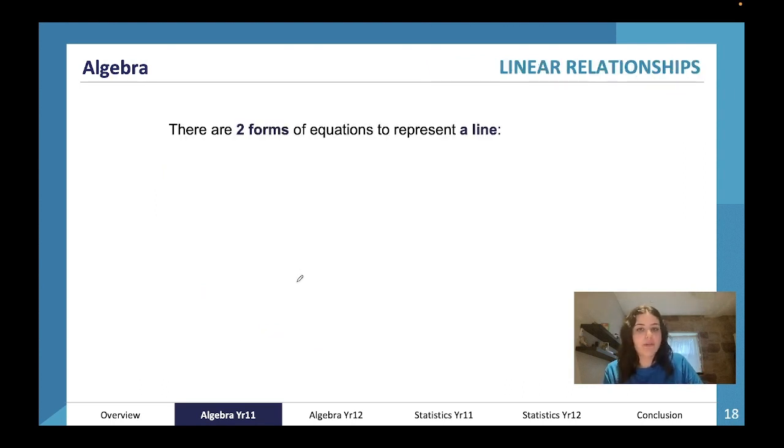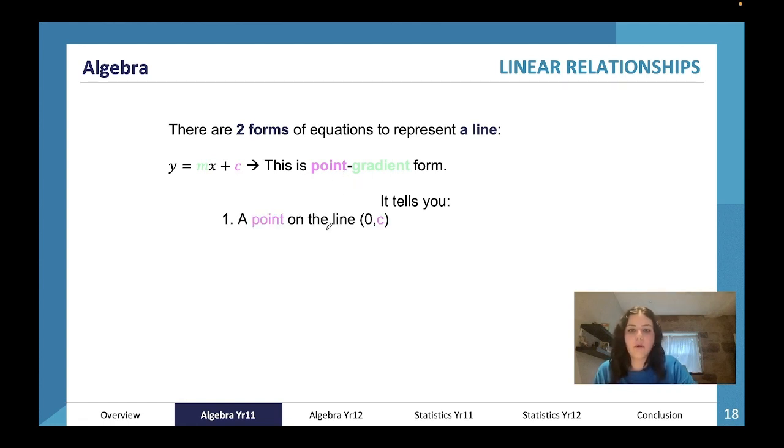Another thing we're going to have a look at with year 11 content is our linear relationships. So when we did year 11 in prelim, we learned about the two forms of equations that we have to represent a line. The first is y equals mx plus c. This is point gradient form. It's telling you that a point on the line is (0, c) - this is the y-intercept. So remember our linear looks like this - this is our y and it's zero something, so it's on this part of the x-axis but it's going in at some point on the y.